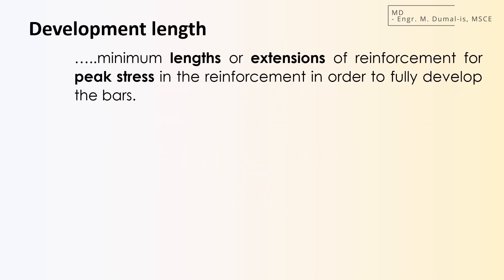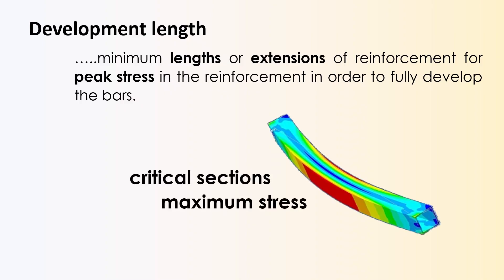Development length refers to the minimum length of reinforcing bar that must extend beyond a point of peak stress to ensure the bar can fully develop its strength without slipping. These points of peak stress are often called critical sections. They typically occur where the bending moment is highest or where adjacent reinforcement ends.